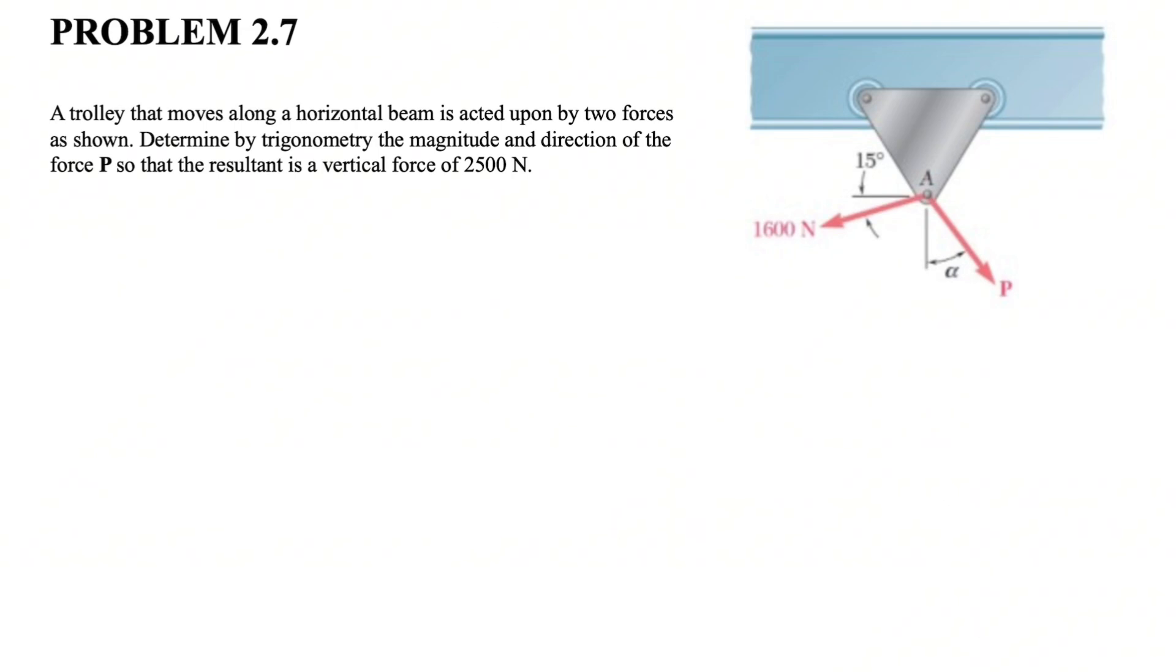So what we have here is this 1600 newton force and the other force is the force P, which we need to figure out the magnitude of. We also have the resultant of these two, which is the vector that connects the tail of the first vector to the head of the second vector.